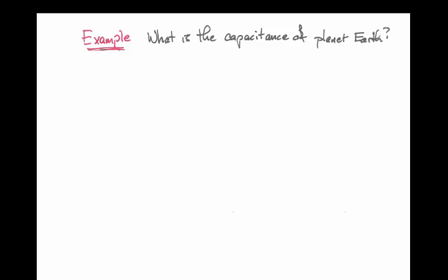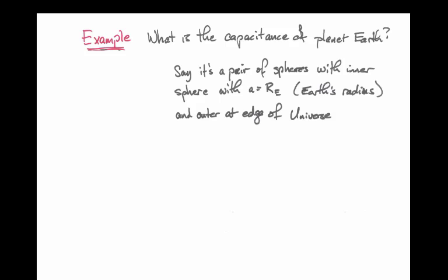As an example, let's consider what is the capacitance of planet Earth. Planet Earth is like a sphere, and we can imagine another sphere located at the other end of the universe. In other words, we have a pair of concentric spheres. The inner one has the Earth's radius, the outer one is infinitely far away. So in our expression for capacitance for two concentric spheres, we'll let the parameter B go to infinity.